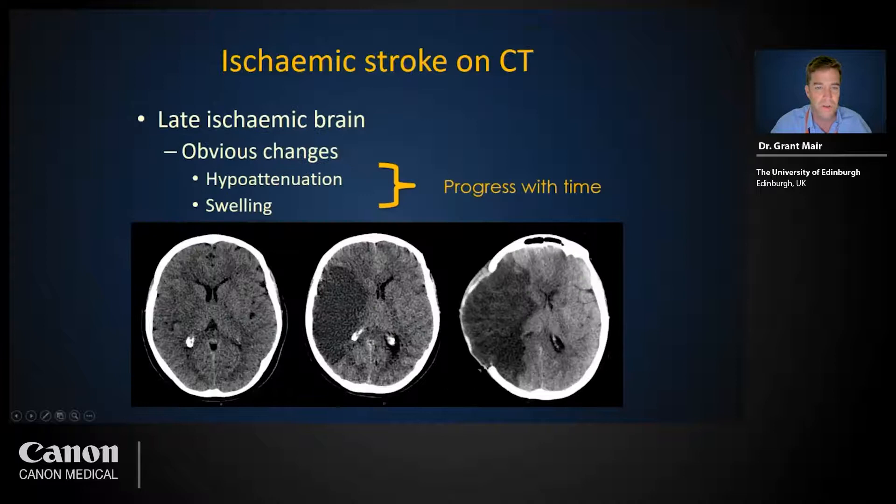Late ischemia on CT is usually easily visible, with marked drop in tissue attenuation seen as darker areas and advanced swelling. These features are secondary to vasogenic edema — a more rapidly progressive state with large net water gains in the brain. This is an unfortunate case of what we call malignant MCA infarction; without surgical intervention to release the pressure of swelling, the patient is likely to die.